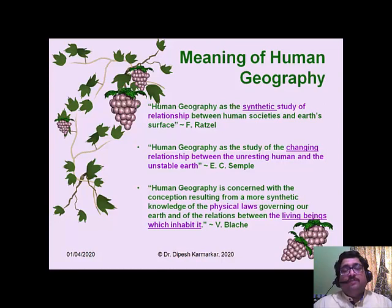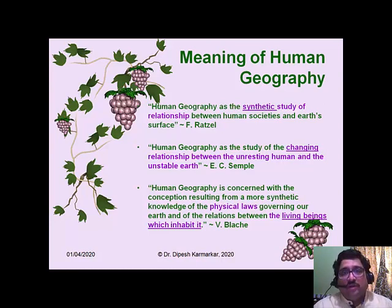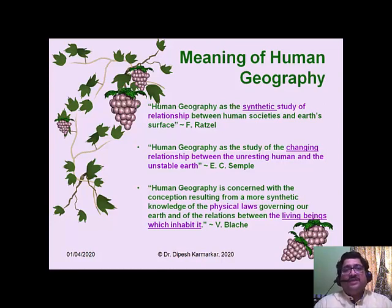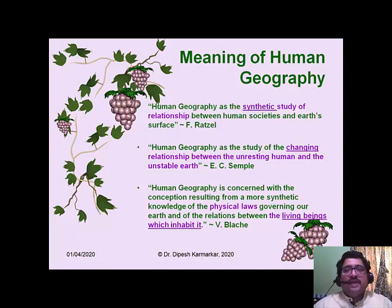The third definition of Blache is important especially because of its last words. The first two definitions consider humans and earth's surface as two different entities altogether. But the third definition by Blache talks about 'living beings which inhabit it,' suggesting the relationship cannot be looked at from duality. Instead, we have to look at living beings including human beings as a part and parcel of nature. So the third definition is more about looking at environment and human beings as one.